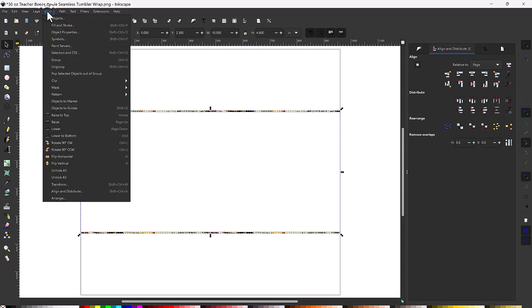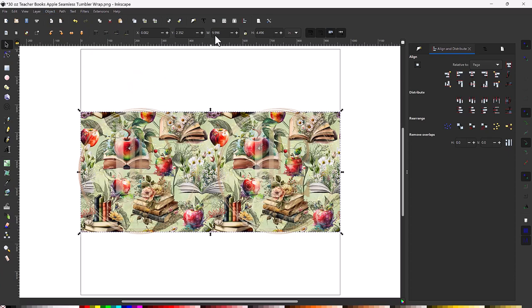Then I will go to object, clip, and select set. You will notice it slightly resized the image. I don't know why it did that but I will just go in and manually adjust the width and height to our needed dimensions.